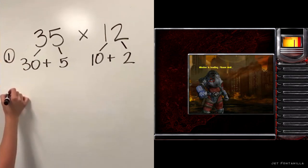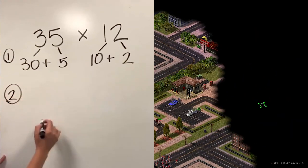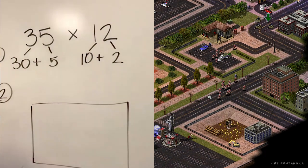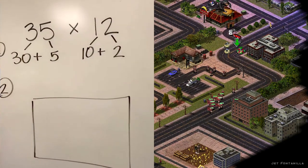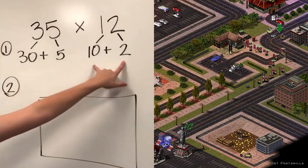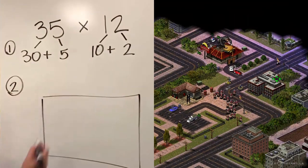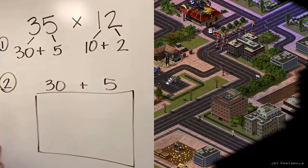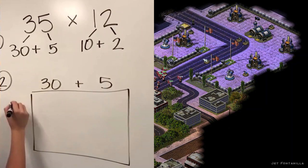The next step would be to draw a large box. And on this box we're going to put both of our expanded numbers. So on the top I'm going to put 30 plus 5, and on the side I'm going to put 10 plus 2.